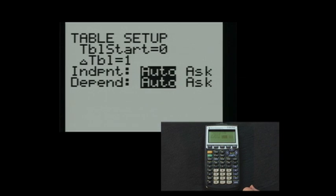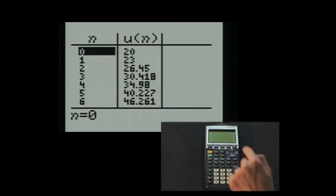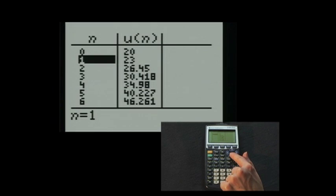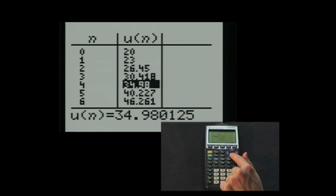Since we want to see each successive iteration, we will set delta table to 1. We now type second graph for the table view. Here we see the table of values with the first column displaying n values and the second column displaying u.